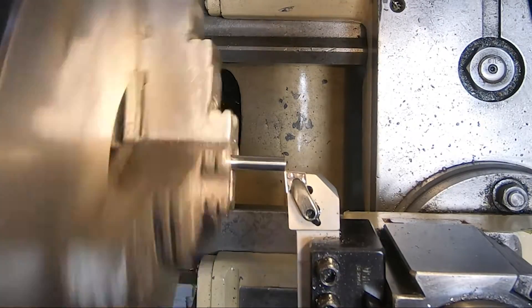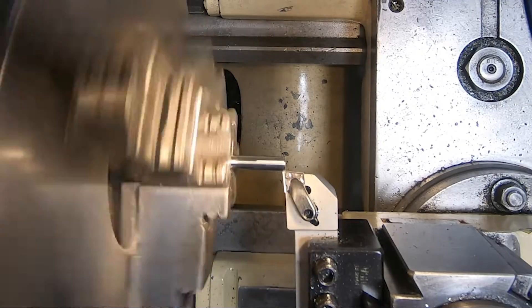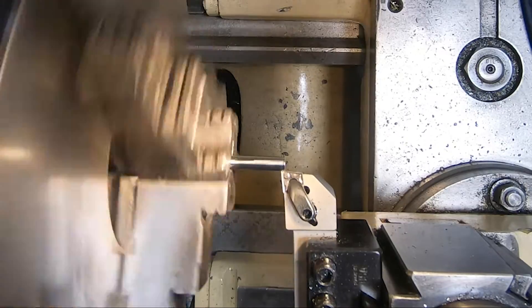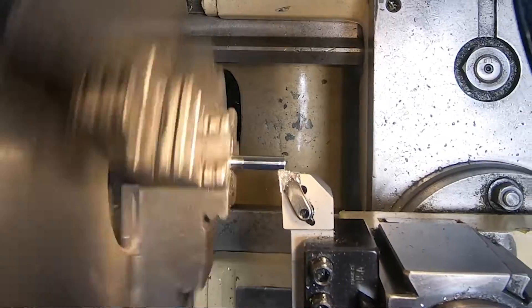I'm using the power feed on the lathe. It's set to the lowest speed that the lathe can do, which is two thousandths per revolution. And I'm turning it about 50 surface feet per minute. I think it's about 400 RPMs. I took four passes on that drill rod. I'm going to speed them up here.